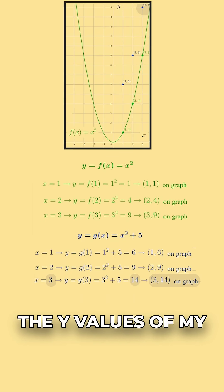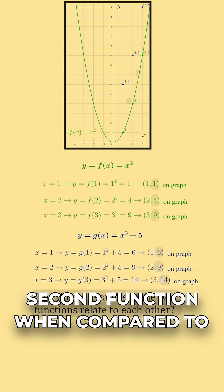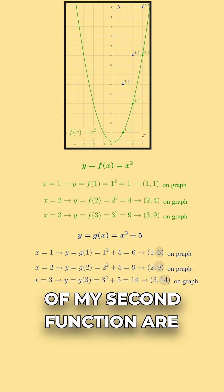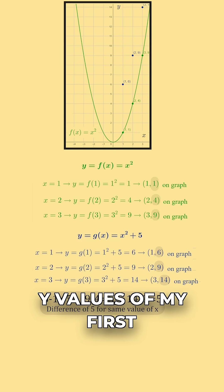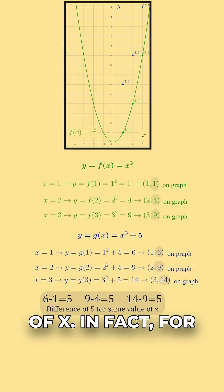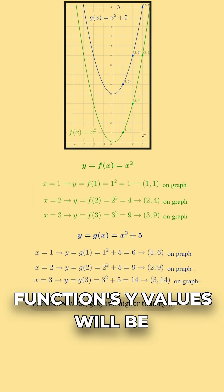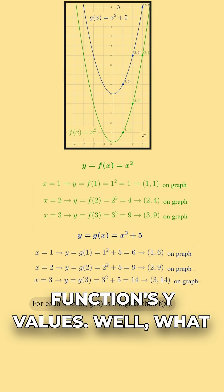What do you notice about the y values of my second function when compared to the y values of my first function? The y values of my second function are all 5 higher than the y values of my first function for the same values of x. In fact, for each value x, the second function's y values will be 5 higher than the first function's y values.